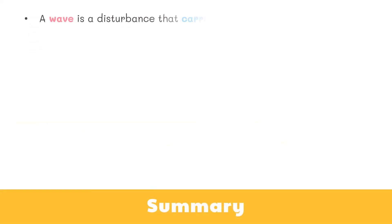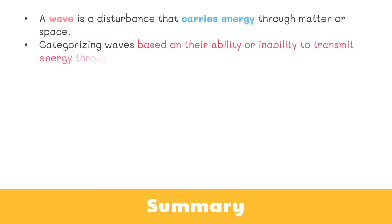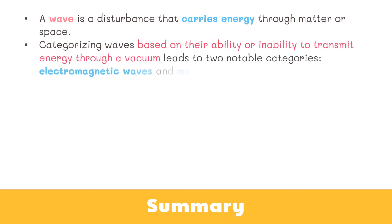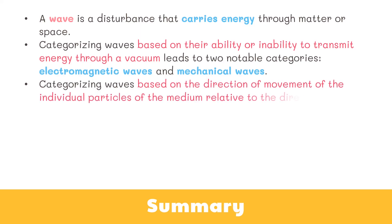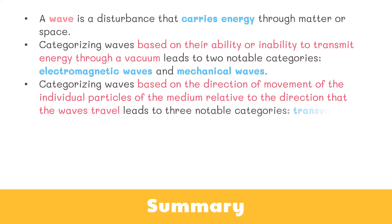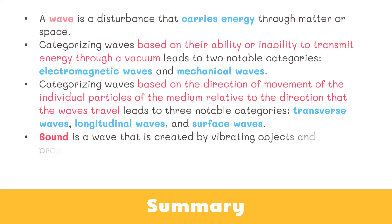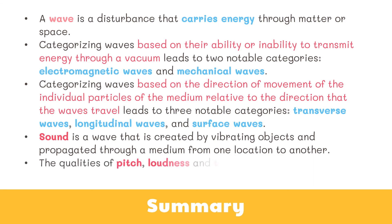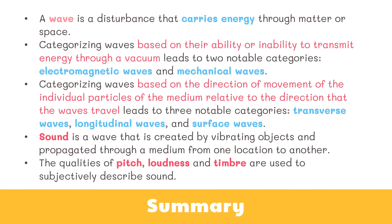Now let's wrap things up. A wave is a disturbance that carries energy through matter or space. Categorizing waves based on their ability or inability to transmit energy through a vacuum leads to two notable categories: electromagnetic waves and mechanical waves. Categorizing waves based on the direction of movement of the individual particles of the medium relative to the direction the waves travel leads to three notable categories: transverse waves, longitudinal waves, and surface waves. Sound is a wave that is created by vibrating objects and propagated through a medium from one location to another. The qualities of pitch, loudness, and timbre are used to subjectively describe sound.